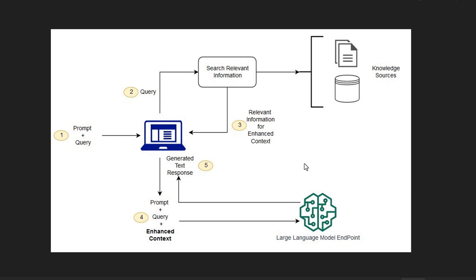The process kicks off when a user inputs a prompt along with a query into the system. This could be anything from a simple question to a complex request that requires additional context. Once the system gets the query, it doesn't immediately send it off to the language model. Instead, it first searches for relevant information from existing knowledge sources like databases, documents, or APIs.